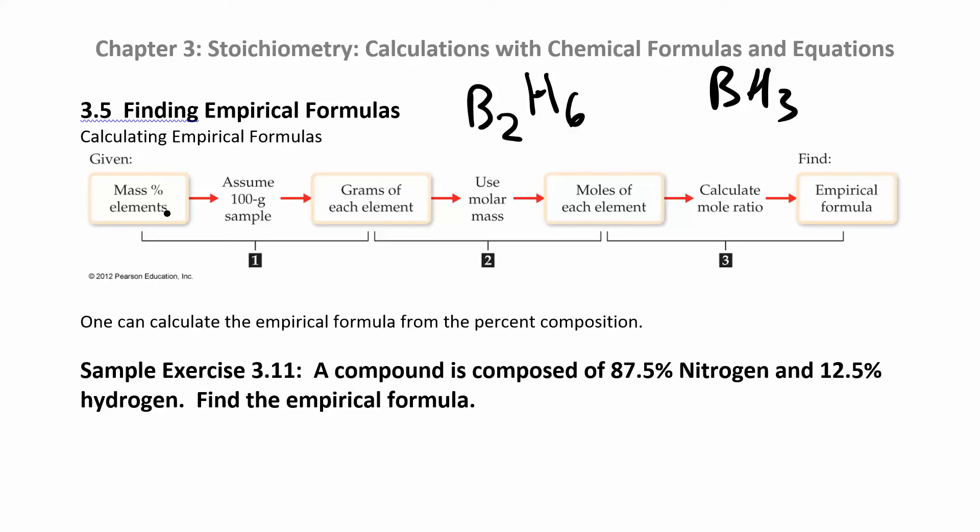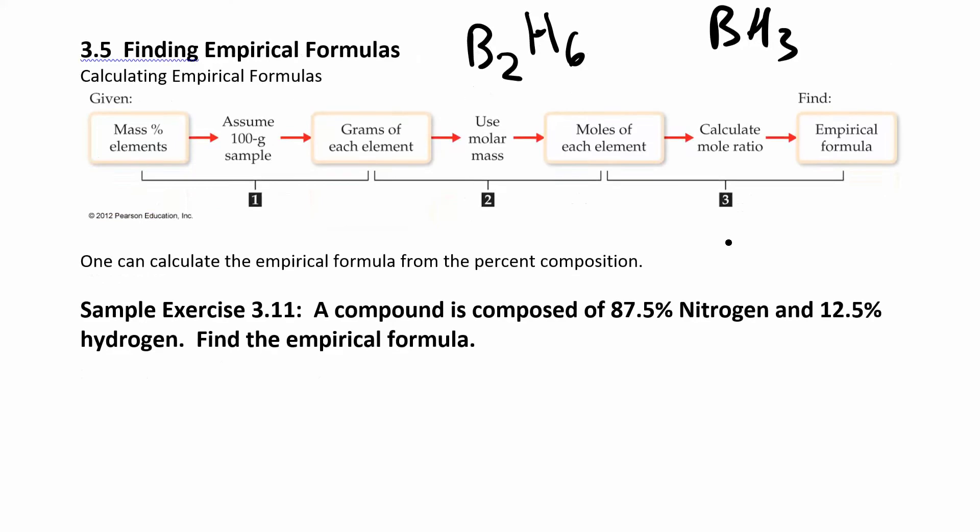Usually what they do is they give you the mass percent of the elements and then you assume you have a 100 gram sample. If you do that, you can just turn all those percents to grams. Then once you're in the gram world, you can convert from grams to moles using molar mass. Once you're in moles, you want to find the simplest molar ratio. So then you divide by the smallest number of moles. You should get whole numbers. If you don't, there's one extra step where you can multiply by some number to get everything into whole numbers. It'll make more sense as you go through and do it.